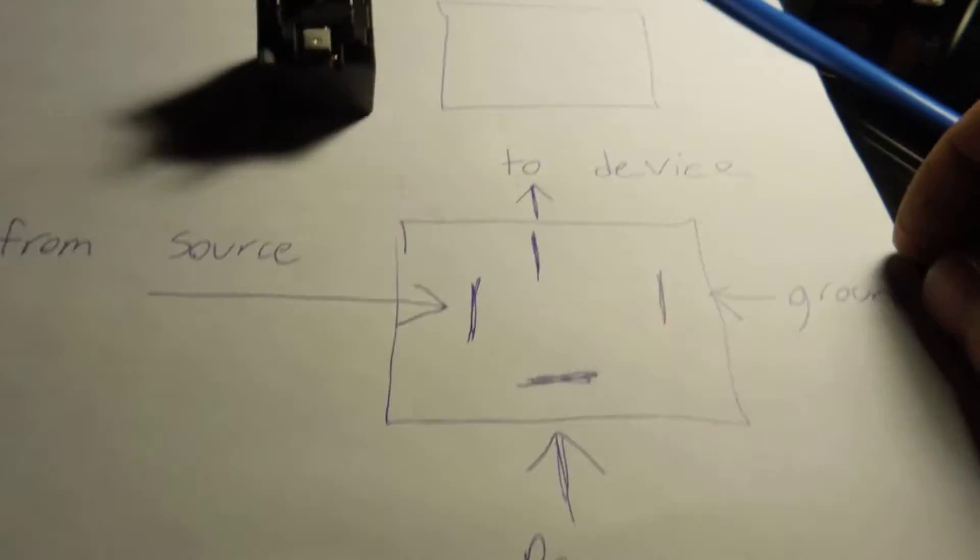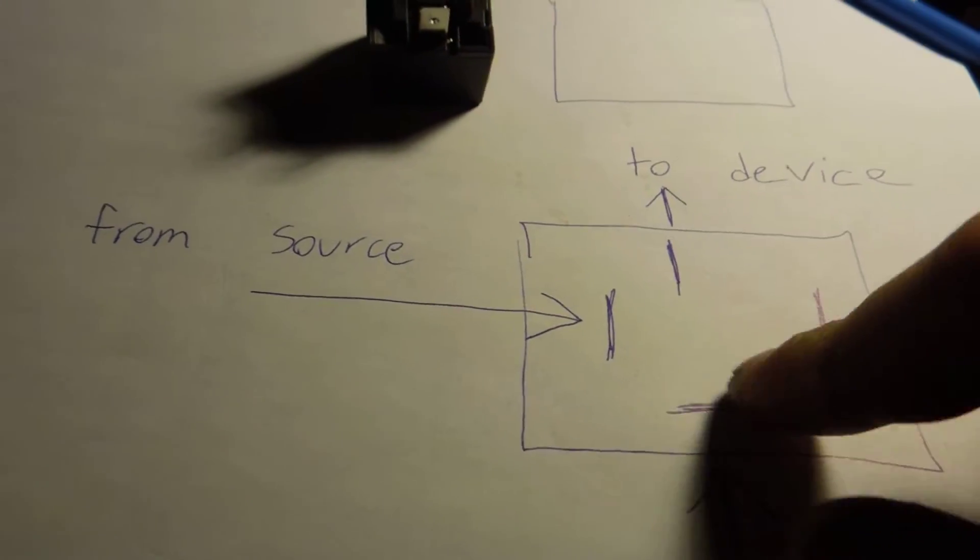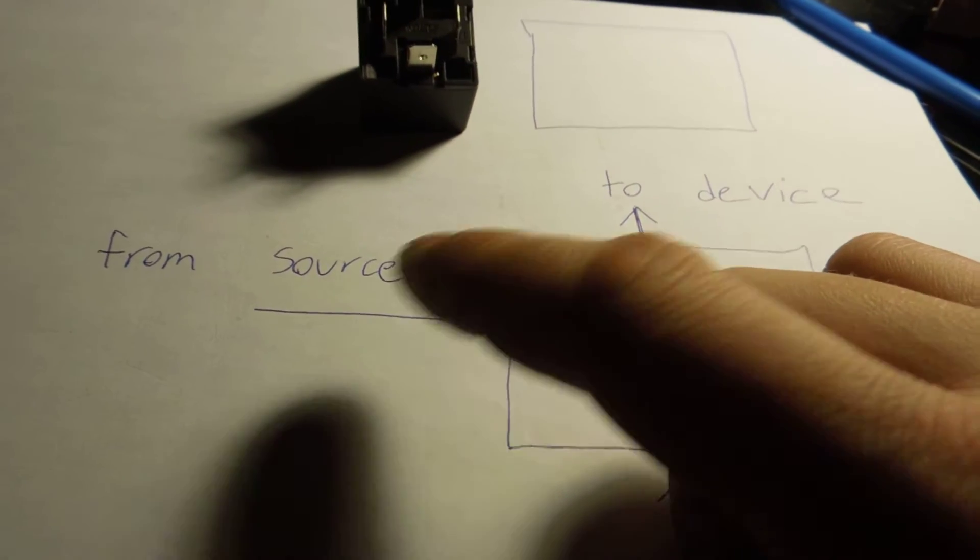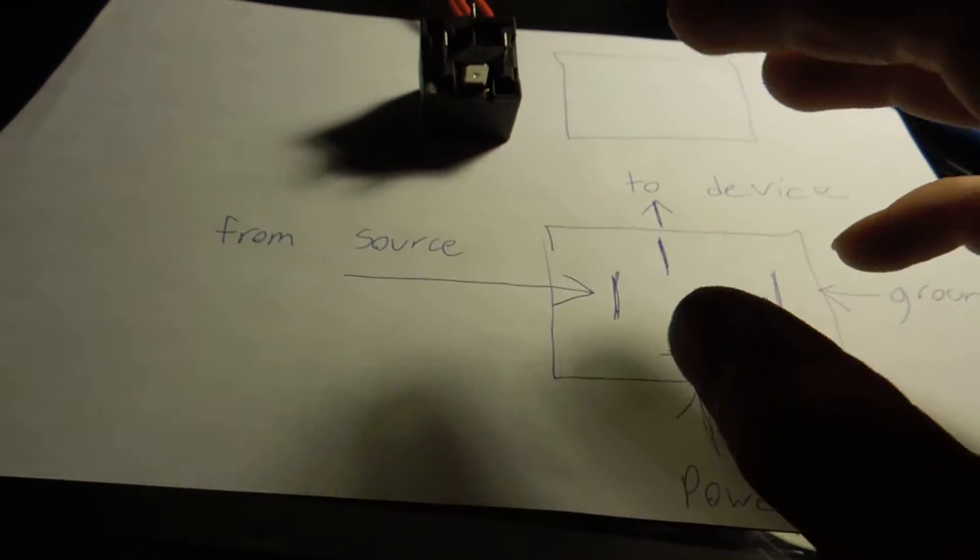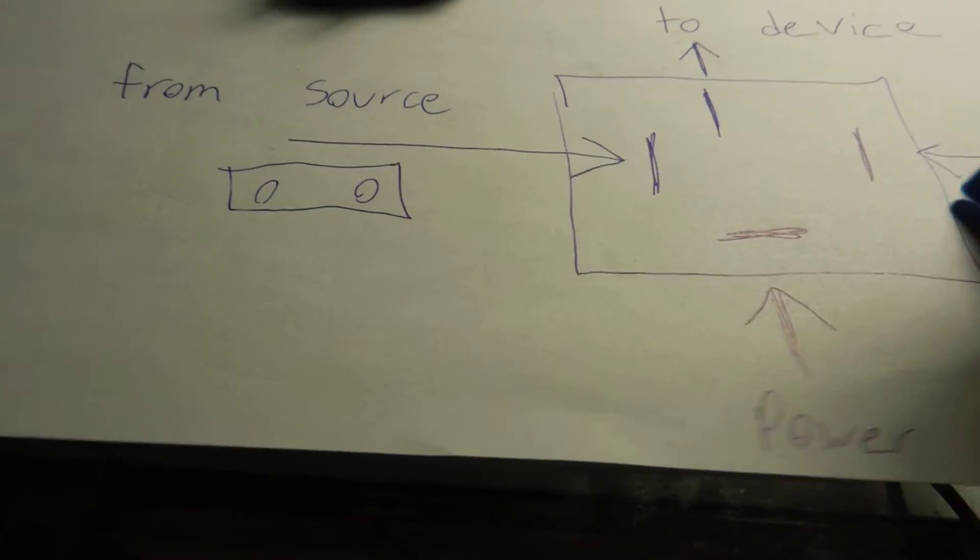So let's say right here I'm showing from a source. Now this source right here is going to be from, we'll say, a car stereo. So let's say we have our stereo right here and you're running some switches.